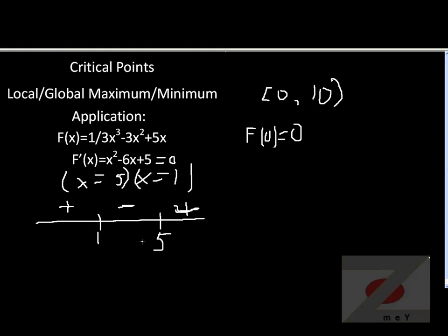But at f of 1, our function equals 2 and 1 third. At f of 5, our function equals negative 25. And at f of 10, f of 10 equals 83 and 1 third.